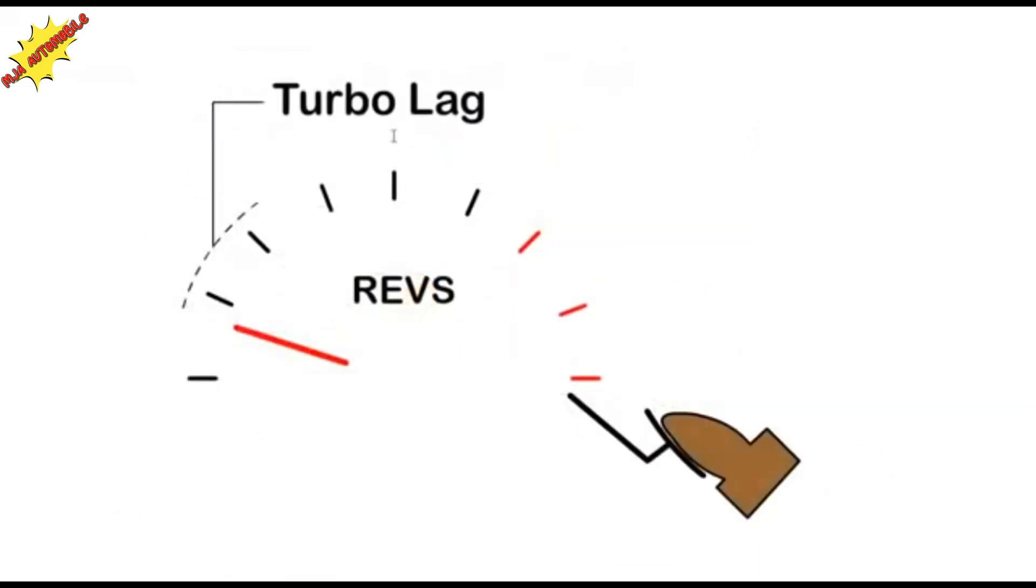At mid-range, we get a surge in power as the turbo develops boost pressure. A variable geometry turbo helps reduce turbo lag.